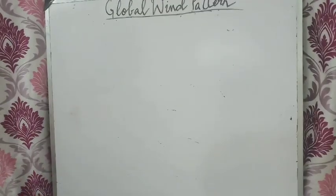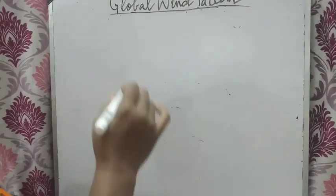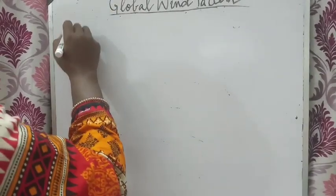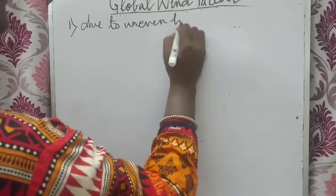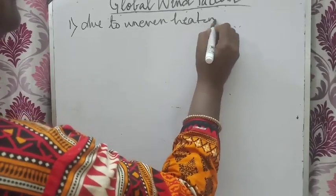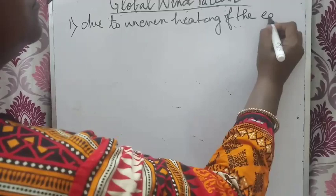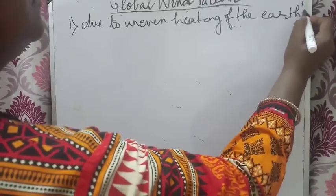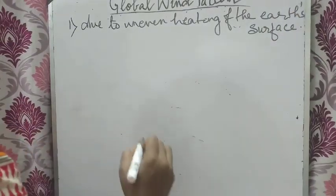For permanent wind, we have to first understand the direction of wind and why wind occurs. Wind occurs or blows globally due to uneven heating of the earth's surface.